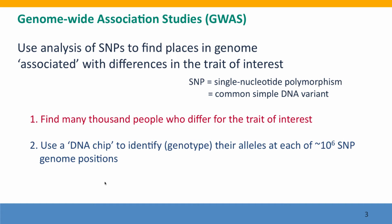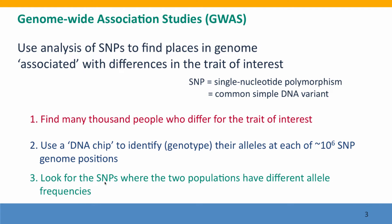The next step is to isolate DNA from all these people and then use a little molecular kit called a DNA chip to identify which SNP alleles they have at each of a million different positions in their genome. So you're going to genotype them for a million SNP loci, specifying which alleles each person has. Some people will be homozygous, some people will be heterozygous.